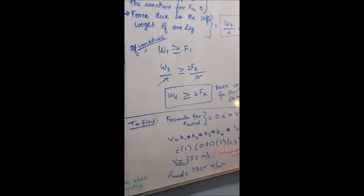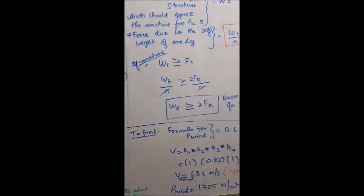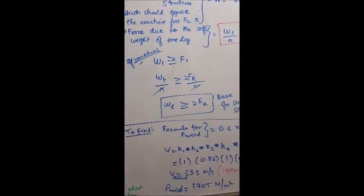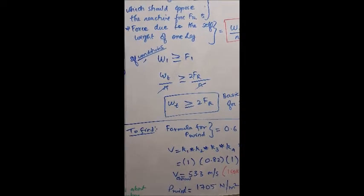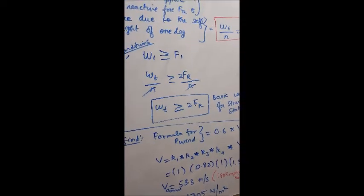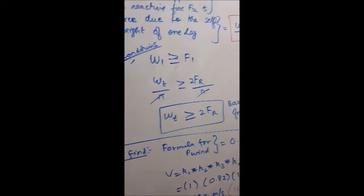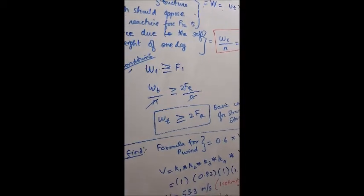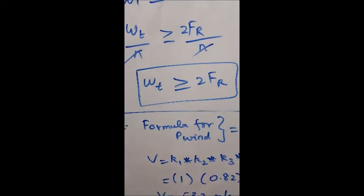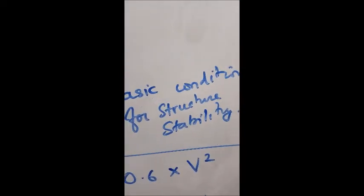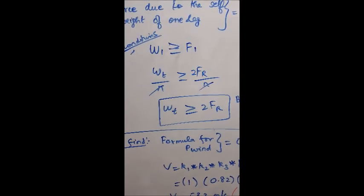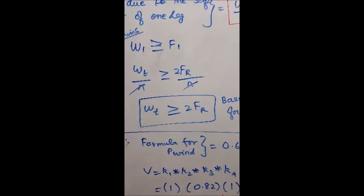This is the most important part: if the weight of the entire system is greater than or equal to F1, the overturning couple force, then we are safe. The weight per leg Wt/n must be greater than or equal to the corresponding leg force from the wind equation. The basic condition for structural stability is that Wt must be greater than twice the wind force — meaning the structure's weight should be at least twice the wind-induced force.